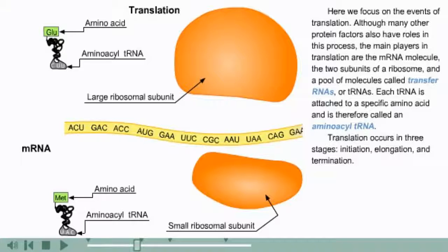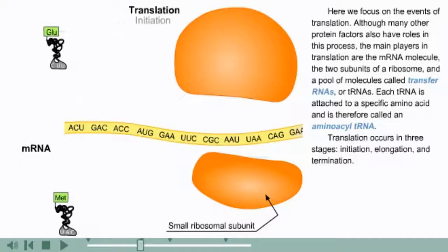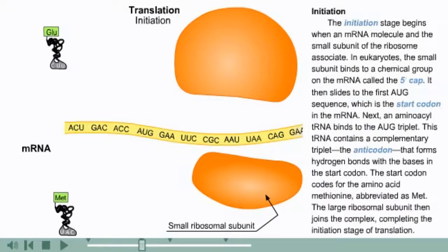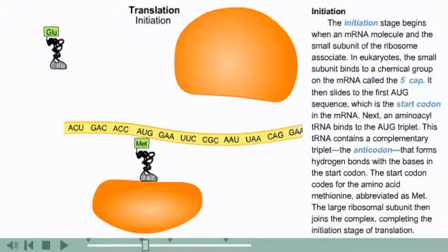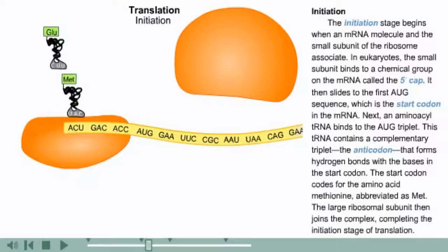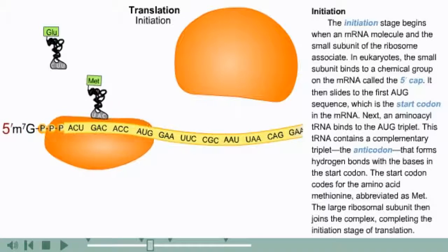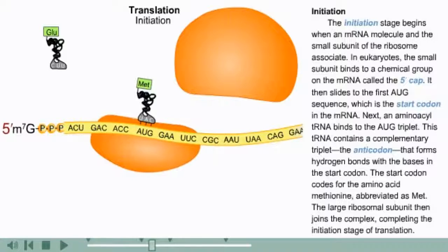Translation occurs in three stages: initiation, elongation, and termination. The initiation stage begins when an mRNA molecule and the small subunit of the ribosome associate. In eukaryotes, the small subunit binds to a chemical group on the mRNA called the 5' cap. It then slides to the first AUG sequence, which is the start codon in the mRNA.